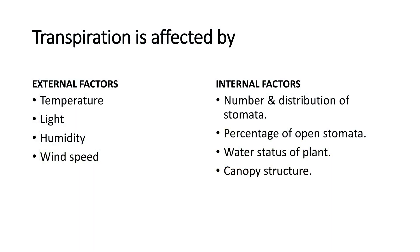Transpiration is affected by external factors and internal factors. External factors are temperature, light, humidity, and wind speed. High temperature or high wind speed increases the transpiration rate. Internal factors also affect transpiration: they include number and distribution of stomata, percentage of open stomata, water status of the plant, and canopy — canopy means shade. These are the internal factors affecting transpiration.